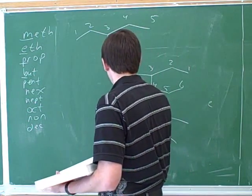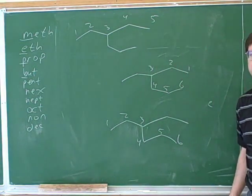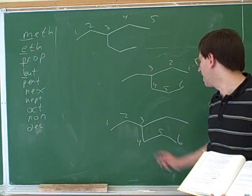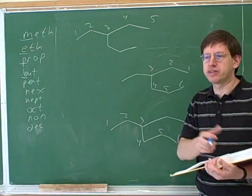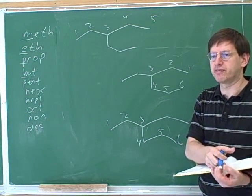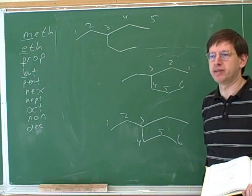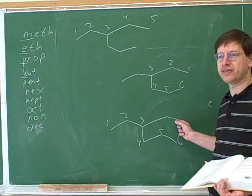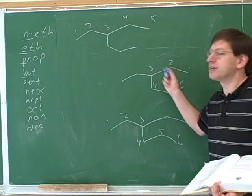Or we could try numbering like this. That also gives us six carbons. So those are pretty much equivalent to each other. So we could call either this the parent chain, or we could call this the parent chain. Either of these would give us the same name overall. So you can pick whichever one you want. The key thing is to try to get the chain with the most number of carbons. So again, there's no rule that says the parent chain has to be completely horizontal. You have to try all the different permutations. But if two permutations give you the same outcome, you can just pick one of those.